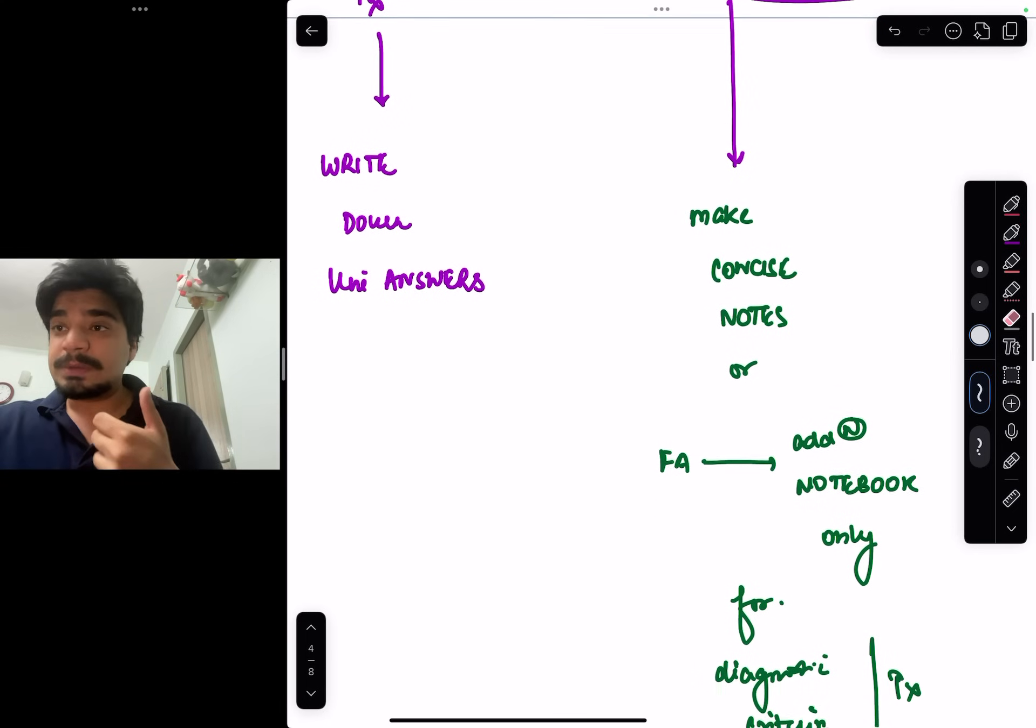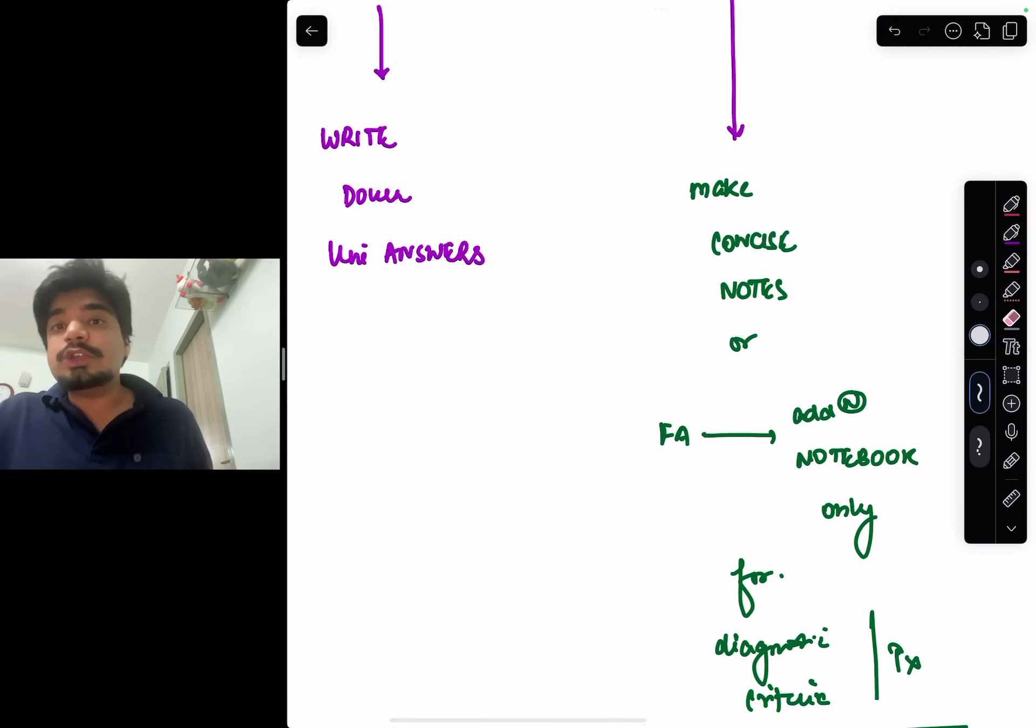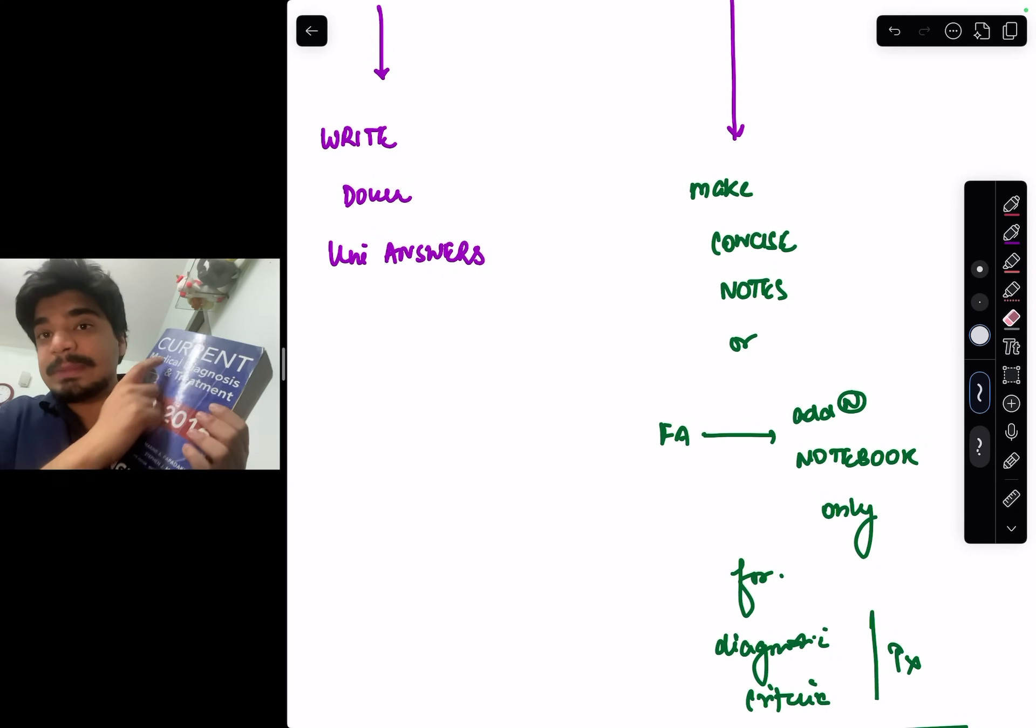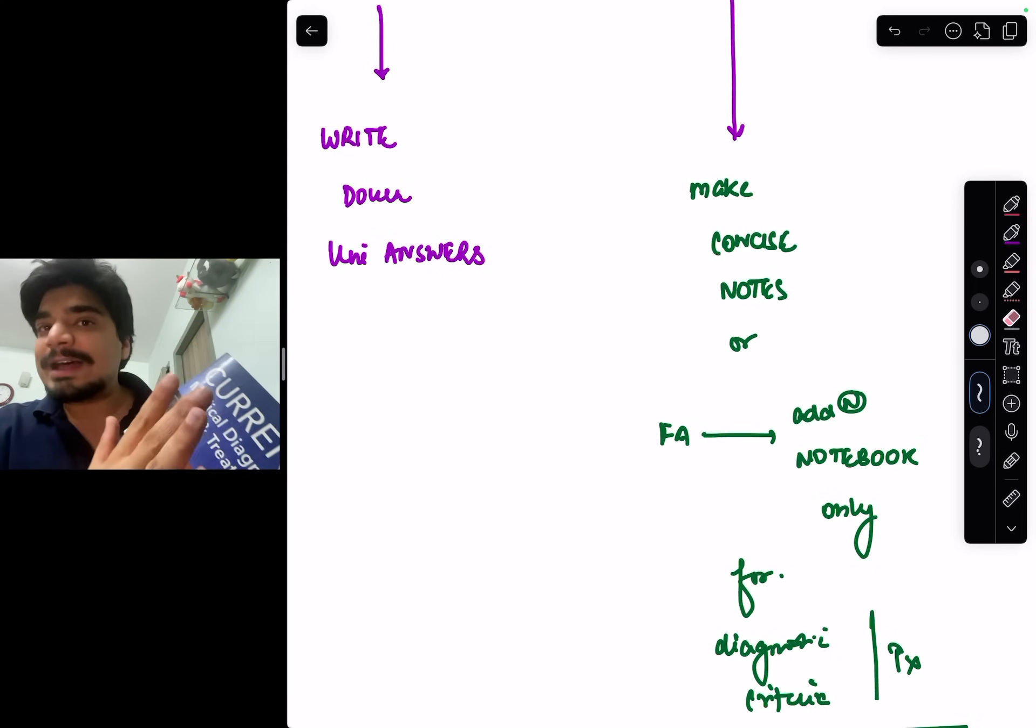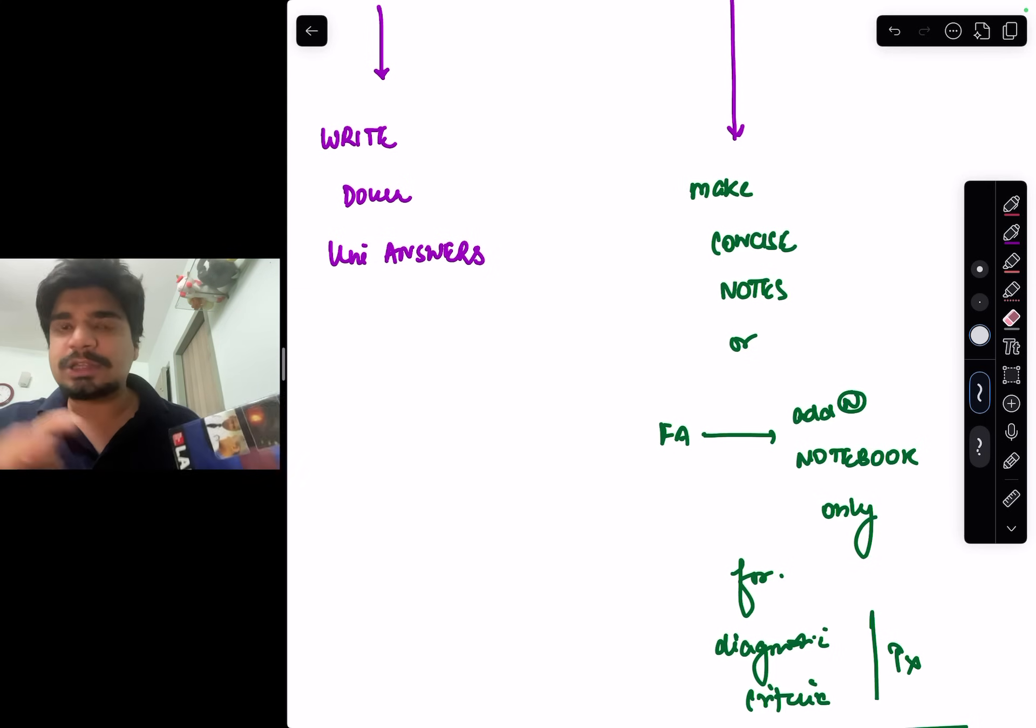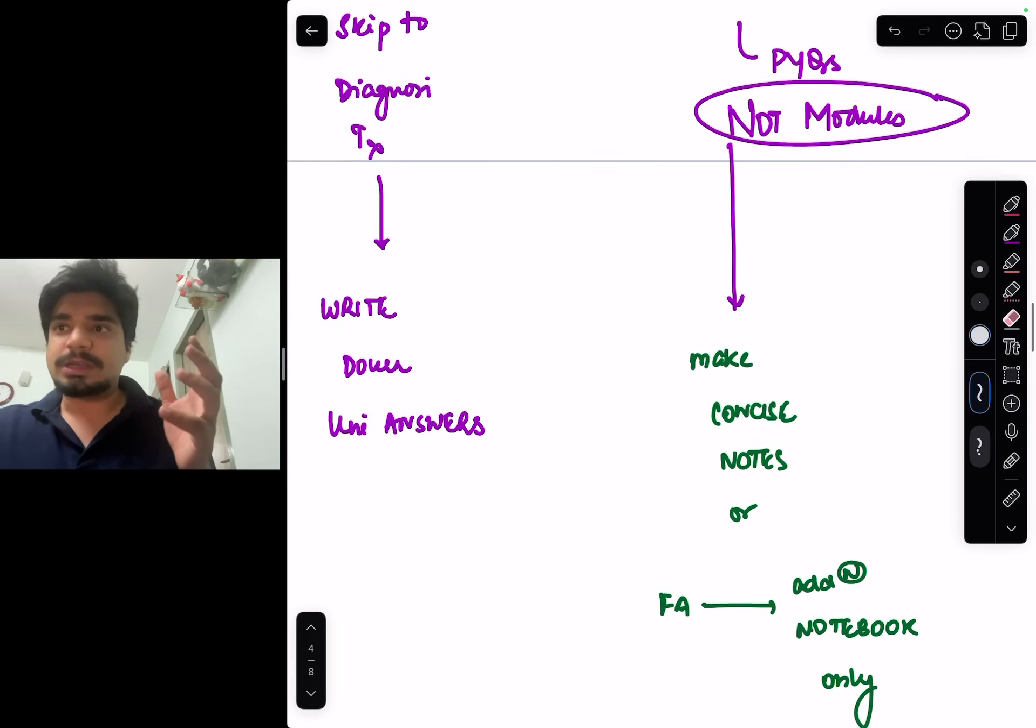This is something which I did and a lot of people in AIIMS do. You don't need to read Harrison. You can directly go to this book called Current Medical Diagnosis and Treatment. This is core medicine. It does not have pathophysiology, it has basic pathophysiology. It doesn't have pharma and everything. It tells you the guidelines and treatment.